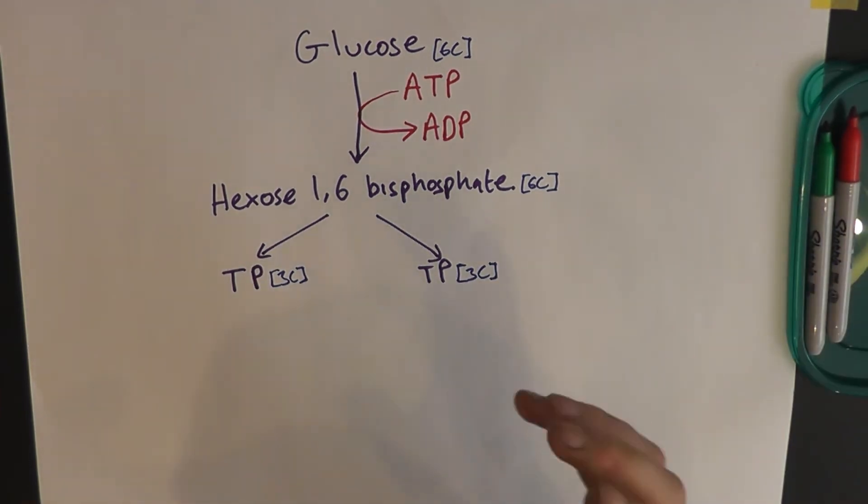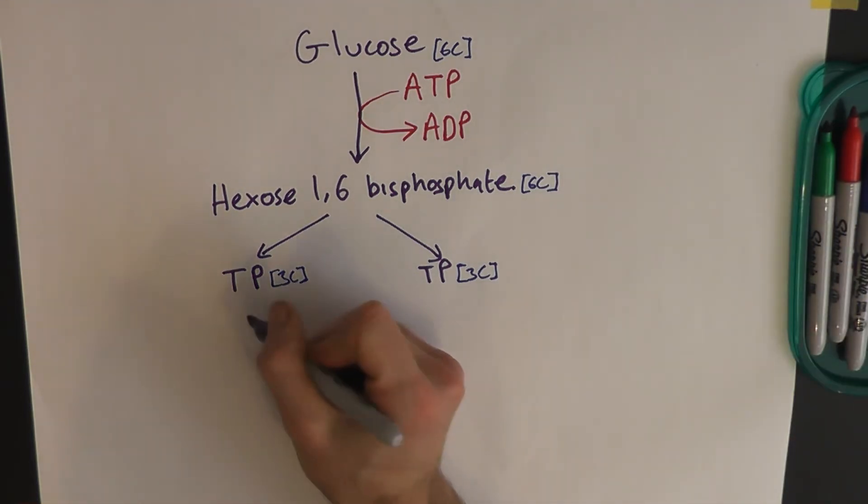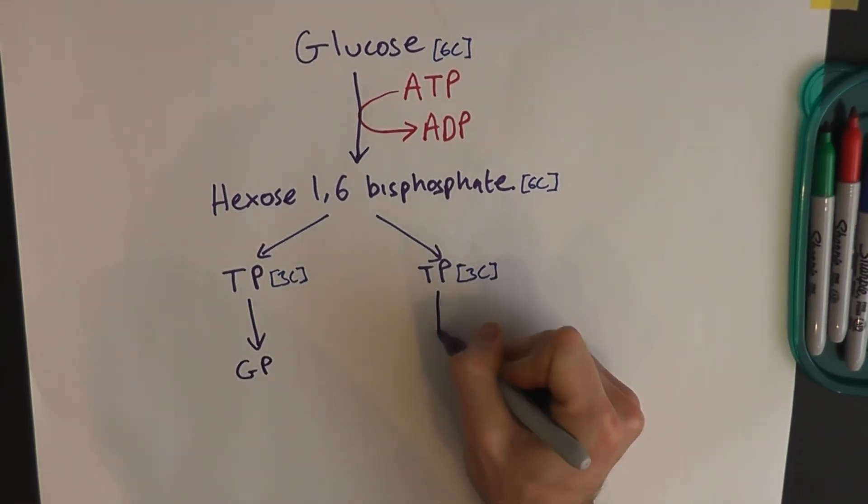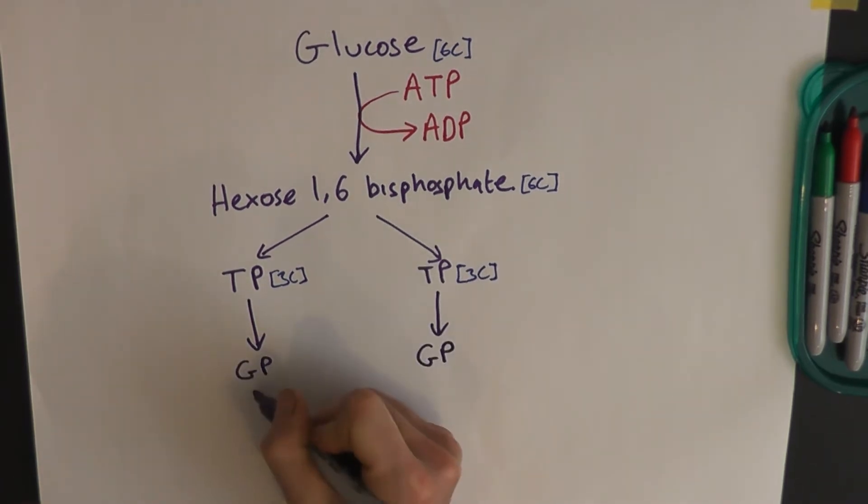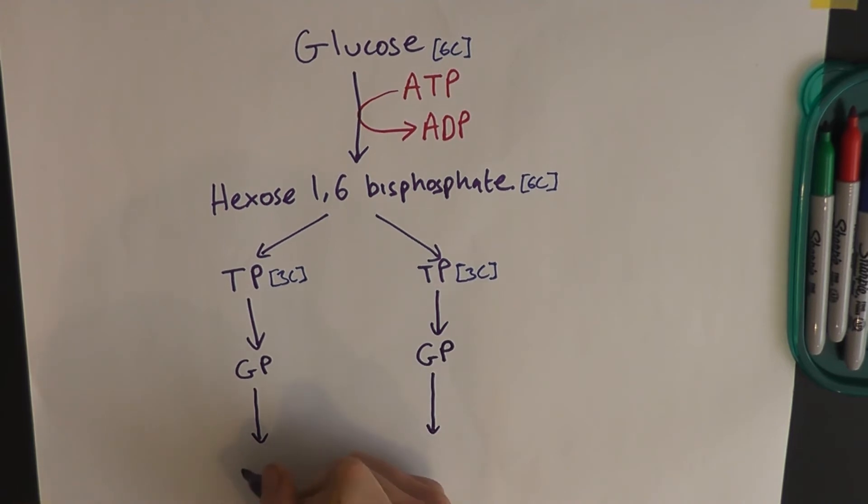So you can see a six-carbon molecule becomes a three-carbon molecule. So we've put some ATP in to get our glycolysis started. The next thing that happens is there's a couple of stages. That triosephosphate gets turned into something called glycerate-3-phosphate. But we're not finished yet.